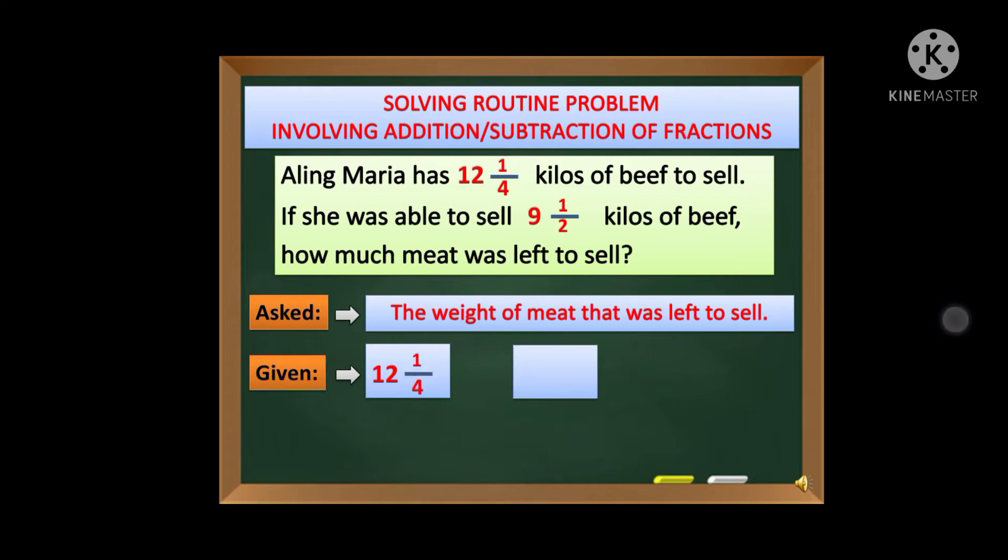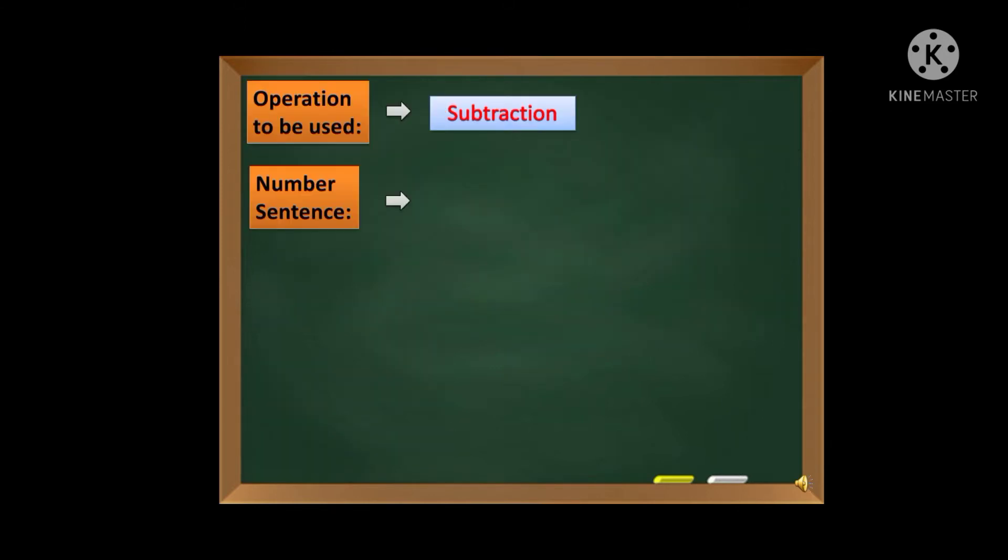At meron din po tayong 9 and one-half kilos of beef. Okay, ano po ang tinatawag nating word clue? Ang word clue ito po ang magiging daan para malaman natin kung ano po ang operations na gagamitin - kung mag-plus, mag-minus, mag-divide or mag-multiply. So 'left' - ito po ay subtraction. Kaya ang operation to be used natin is subtraction. So ano naman nating number sentence? Ang number sentence is a combination of operation to be used in given facts. So meron tayong 12 and one-fourth minus 9 and one-half is equal to N.